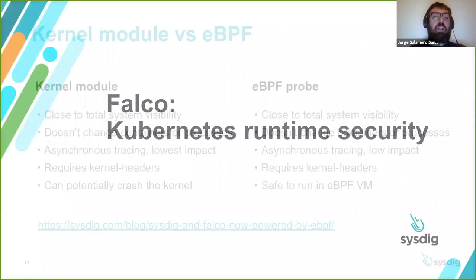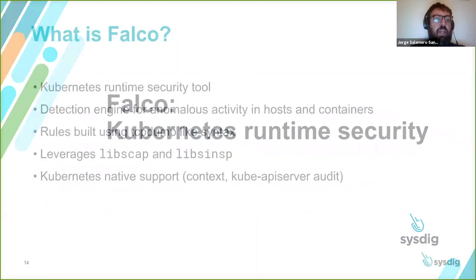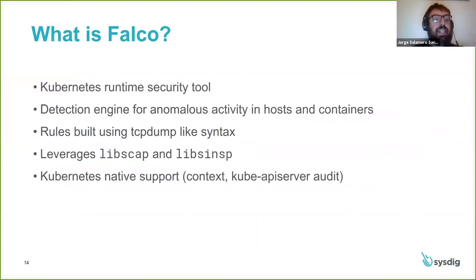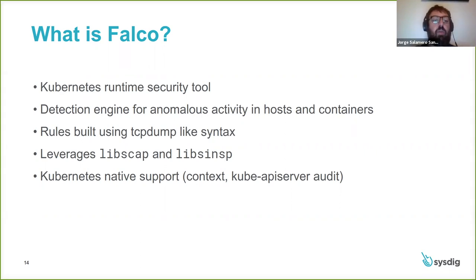Now let's talk more about how Falco leverages these. Falco is considered the de facto Kubernetes runtime security tool — it's basically a detection engine for any kind of anomalous activity that might be happening on your host or in your containers. Falco leverages a set of rules that follow a syntax very similar to tcpdump to define what's considered anomalous and what's considered safe. It leverages open source libraries — libscap and libsinsp — coming from the Sysdig open source project to get this visibility. It has Kubernetes native support, so every system call is tagged by the Kubernetes context: namespace, deployment, daemon set, pod, etc. So we know from which application or microservice each activity is coming.